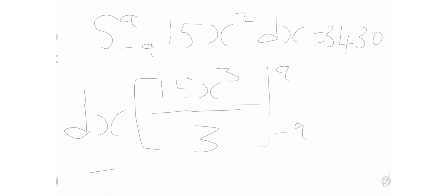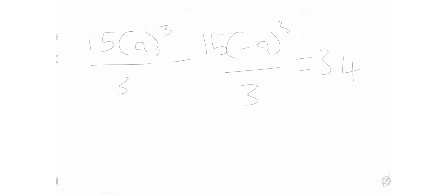Now I'm going to subtract the values at the bounds from each other. So we get: 15 times bracket a³ over 3, minus 15 times bracket (-a)³ over 3, equals 3430.